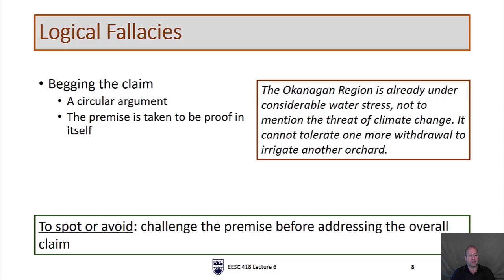Begging the claim — also known as a circular argument — is when the premise is taken to be proof in itself. For example: 'The Okanagan region is already under considerable water stress, not to mention the threat of climate change. It cannot tolerate one more withdrawal to irrigate another orchard.' This might be a local resident arguing against a water permit. It may or may not be true — but you need to actually look at the data and the water users on the lake, not just somebody's statement. Challenge the premise before addressing the overall claim.